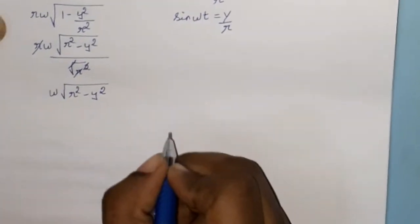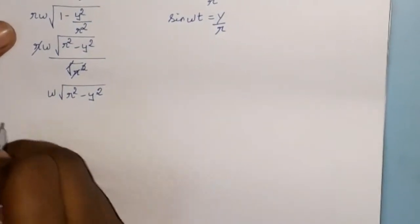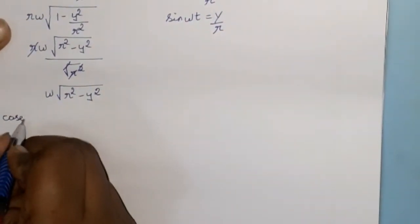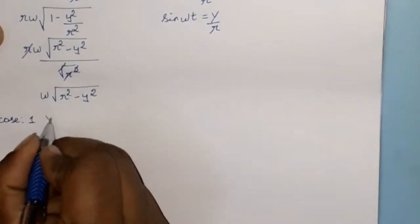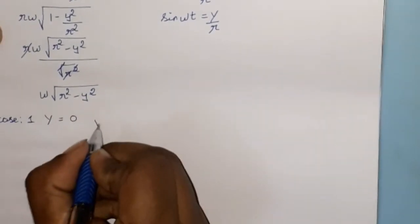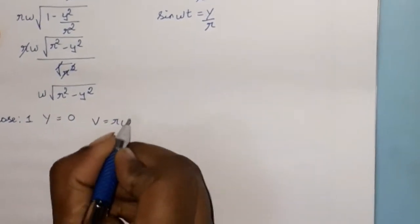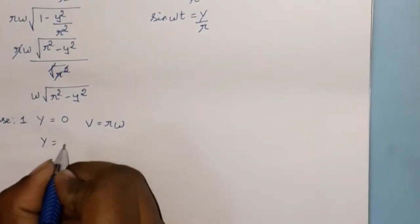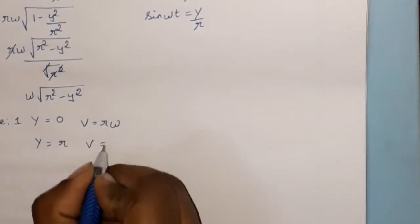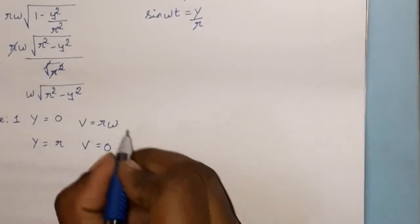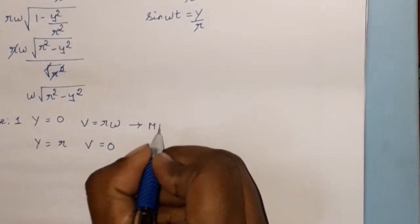This is nothing but the velocity expression. Case 1: When y equals 0, then v equals r omega. When y equals r, then v equals 0. So this is at the mean position; when it is in extreme position, velocity is zero.